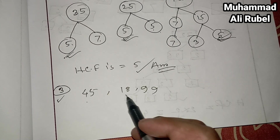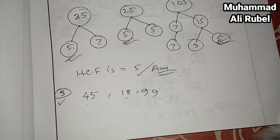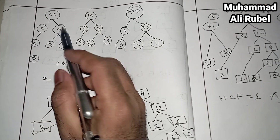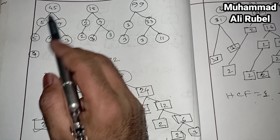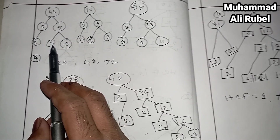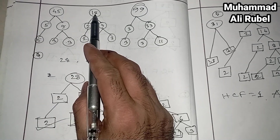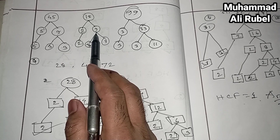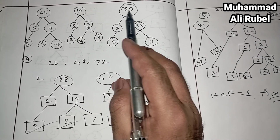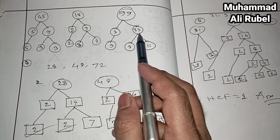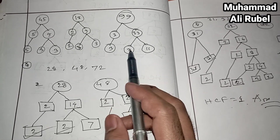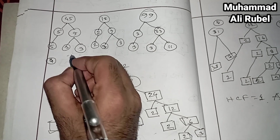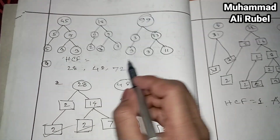For problem 3: 45, 18, and 99. For 45: 5 times 9, and 9 is 3 times 3. For 18: 2 times 9, and 9 is 3 times 3. For 99: 9 times 11, and then 33 is 3 times 11.